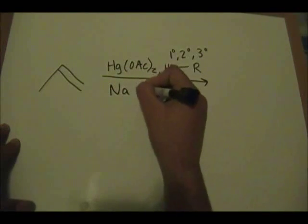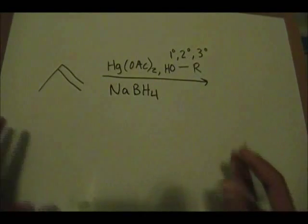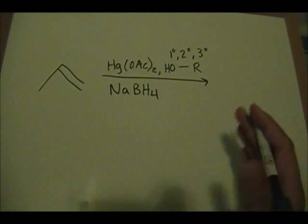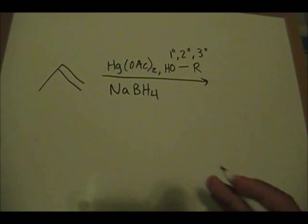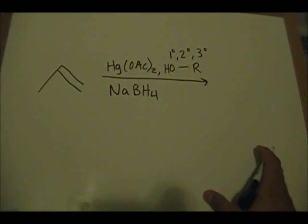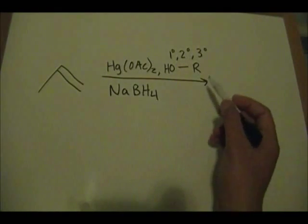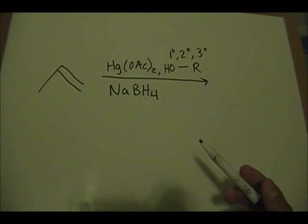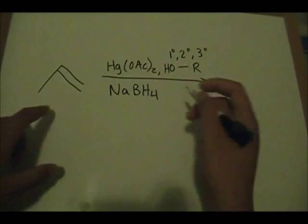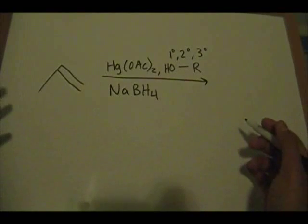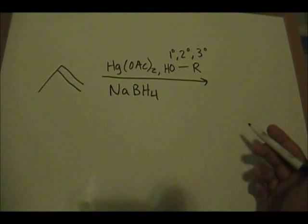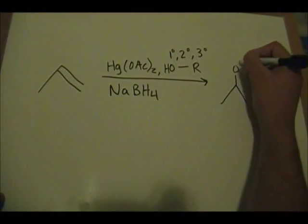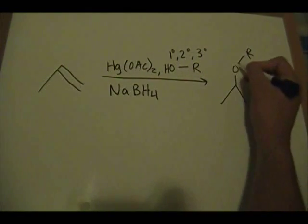To a lot of you, this will be very familiar, and it is. This is almost the exact same thing as oxymercuration-demercuration, the reaction you should know from first semester organic chemistry. The only difference is that in alkoxymercuration you use an alcohol instead of water — that's the main difference. The reaction mechanism follows the same basic steps. The result is that you still form the Markovnikov product, but instead of forming a Markovnikov alcohol, you form a Markovnikov ether.